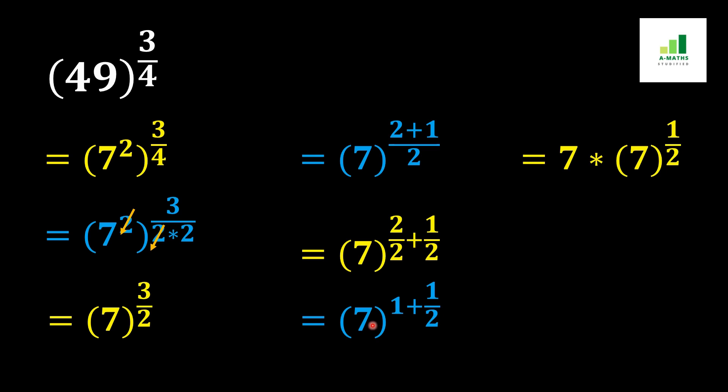Now in the next step we can apply this 7 individually with both of these powers, as 7 to the power 1 will be equal to 7, with a multiplication sign, and then 7 to the power 1 over 2.